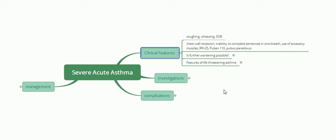On examination, you can see chest wall recession. There is inability to complete sentences in one breath — if you ask the patient to speak a sentence, they have to stop in between to take breaths. There is use of accessory muscles such as the trapezius and sternocleidomastoid, which signifies respiratory distress. Respiratory rate greater than 25 per minute is very important and shows respiratory distress.